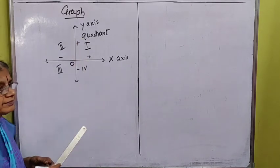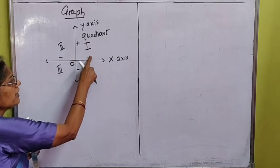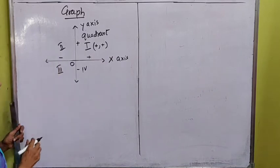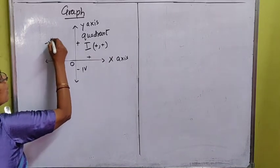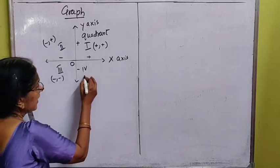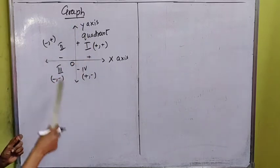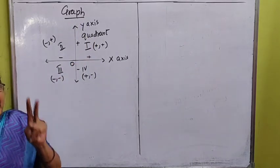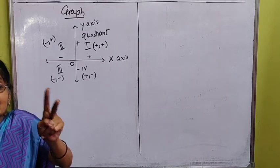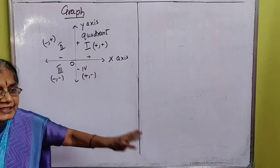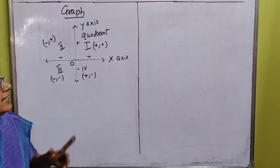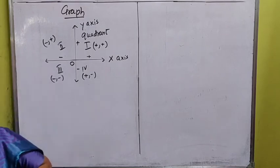In the first quadrant, the values of x and y are both positive. In the second quadrant, x is negative and y is positive. In the third quadrant, both x and y are negative. In the fourth quadrant, x is positive and y is negative. The first number in a coordinate pair always indicates x and the second always indicates y. Representing x and y values as dots and joining them gives a straight line — that is the graph.